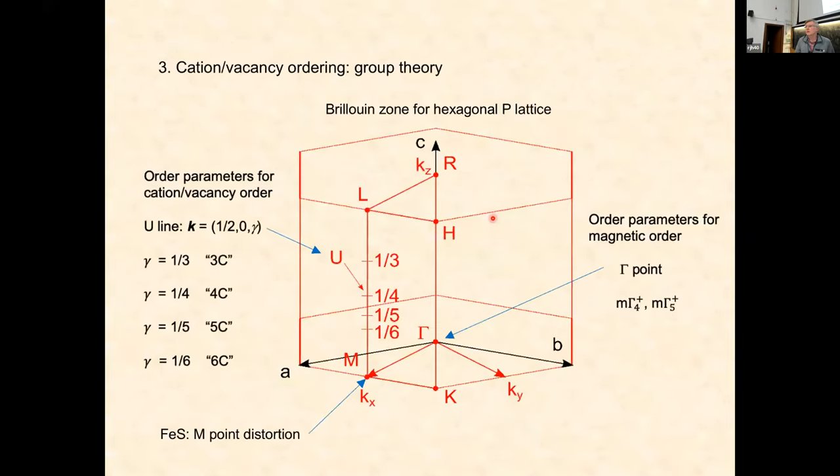If we want to understand how that magnetism interacts with the vacancy ordering, you basically have to do group theory, which I don't want to immerse you in. But it's a simple way of characterizing how these things interact on a fundamental scale. There's no choice, group theory is group theory, they can't behave any differently.